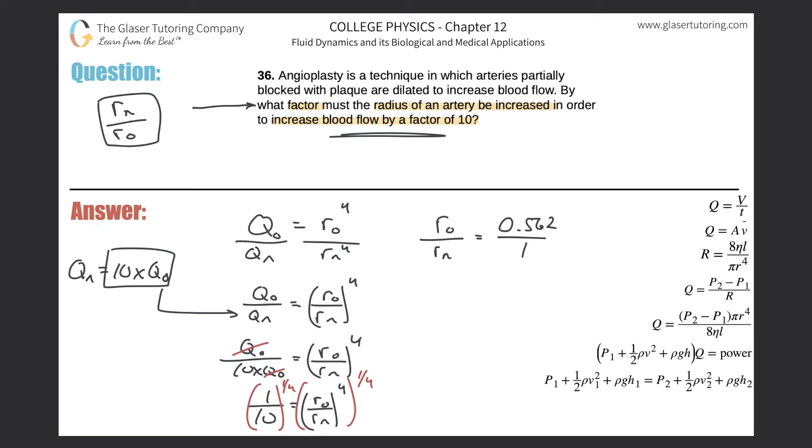So what this is telling us is essentially that the old radius before the angioplasty will be about half that of the size of the new radius after the angioplasty is performed.